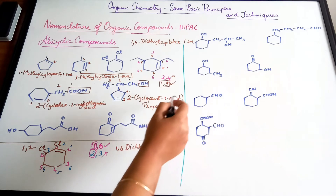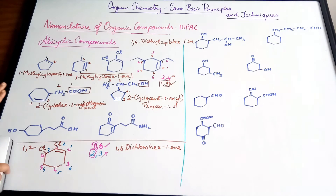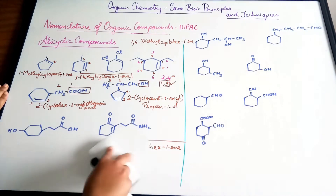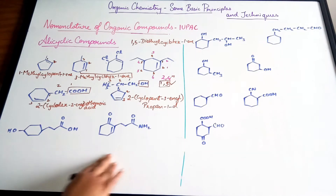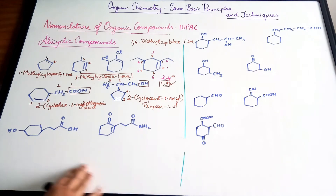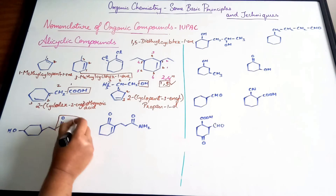Next, in compounds where both the ring and the side chain have a functional group, the compound is considered a derivative of whichever part carries the principal functional group, based on the order of priority studied when we covered compounds with two or more functional groups.